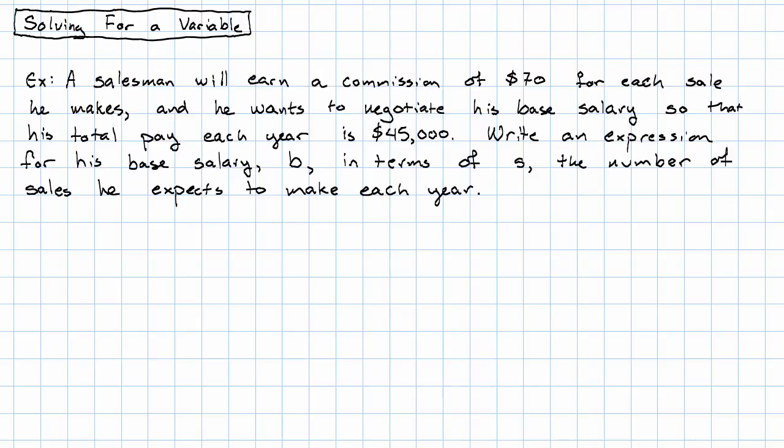Let's see an example where this is the case, and then see how we're going to accomplish it. Suppose that a salesman will earn a $70 commission for each sale he makes, and he wants to negotiate a base salary so that his total pay for the year will be $45,000.